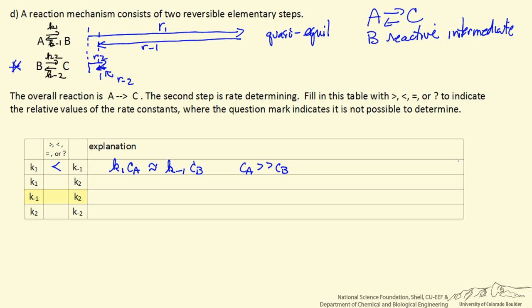Well you can see from this representation, R minus 1 is much greater than R2, which means K minus 1 concentration of B is much greater than K2 concentration of B. Cancel these concentrations of B. So this says K minus 1 is much greater than K2. Of course that's what we might expect from the rate determining step.